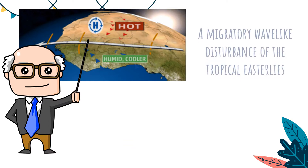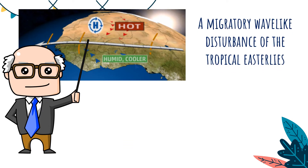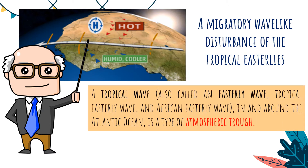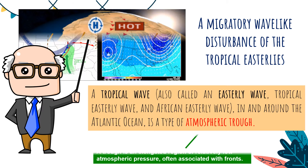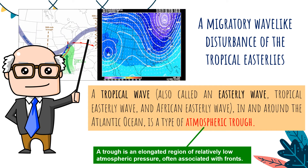Basically, easterly waves are a migratory wave-like disturbance of the tropical easterlies, and this happens only in the tropical region. A tropical wave is also called an easterly wave, tropical easterly wave, or African easterly wave, and is a type of atmospheric trough — an elongated region of relatively low atmospheric pressure, often associated with fronts, which represent a change in temperature and pressure of a certain place.